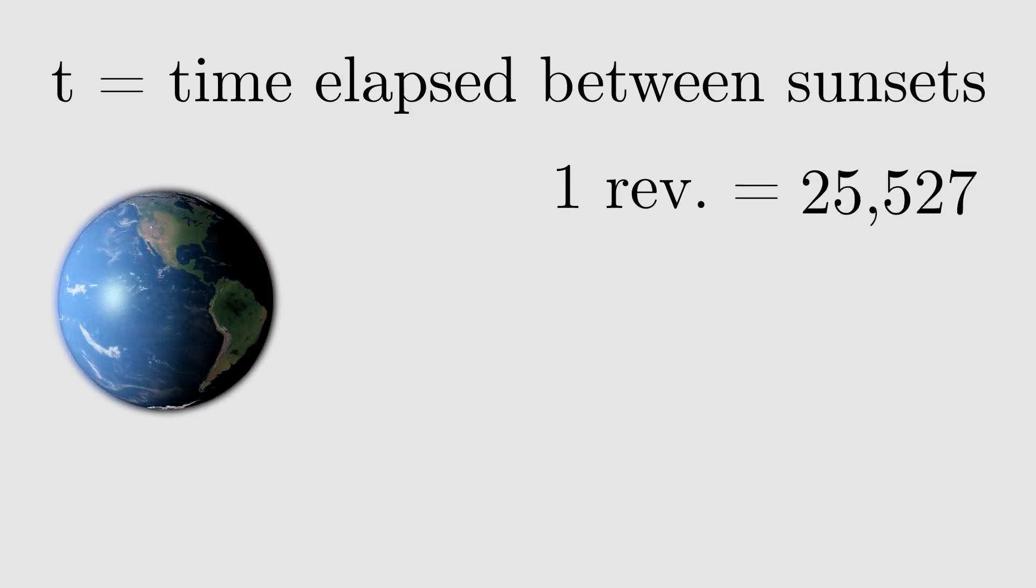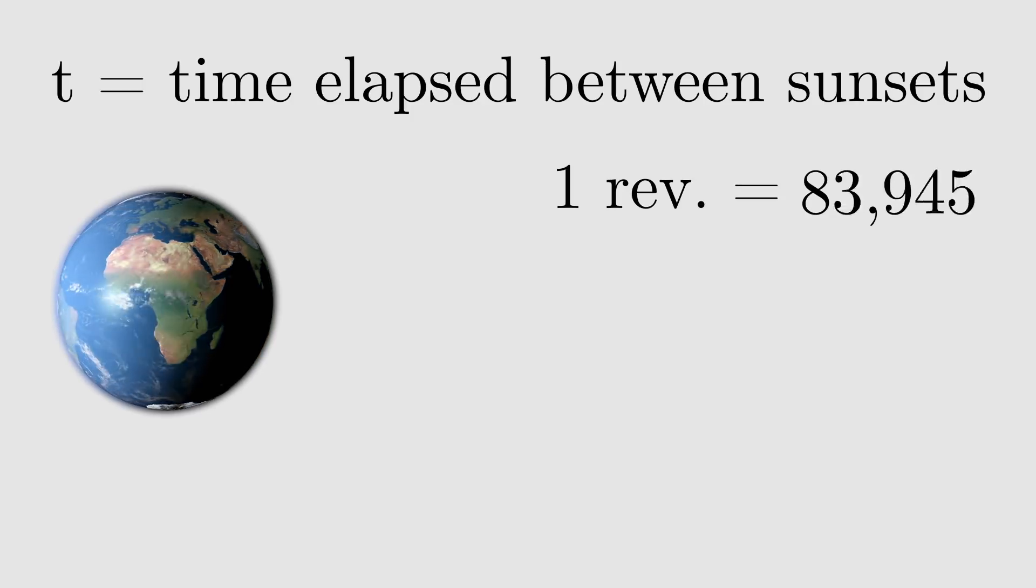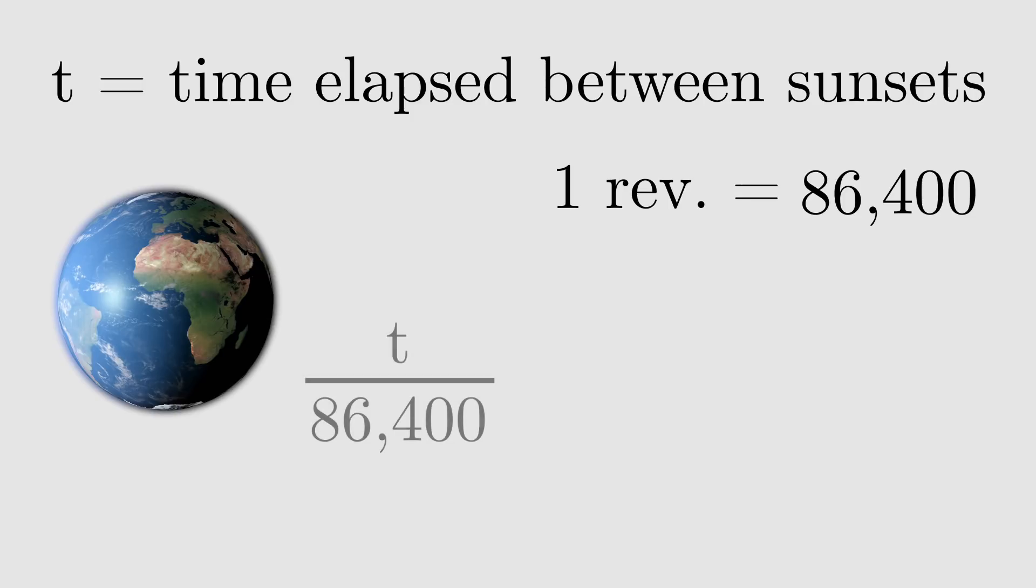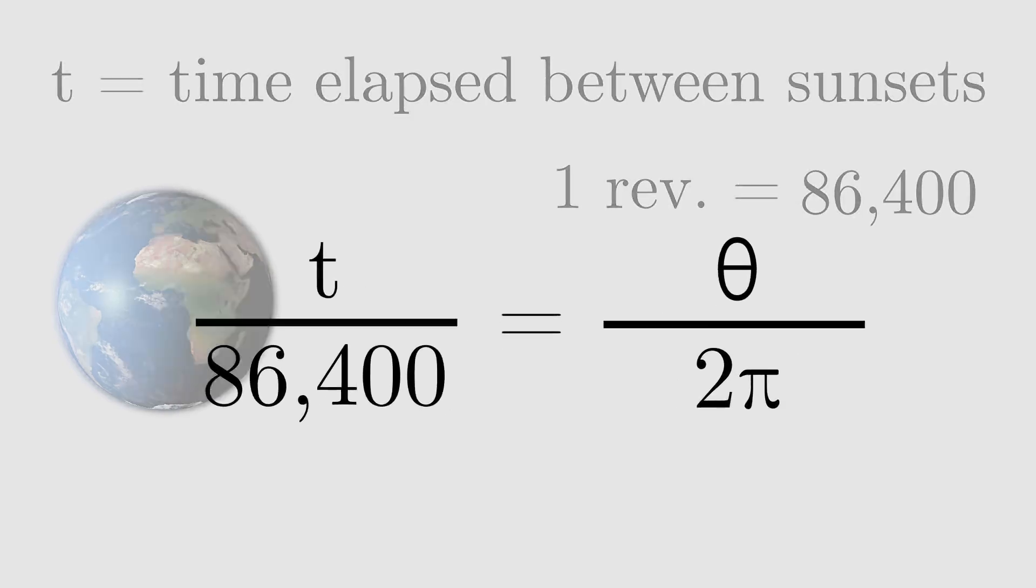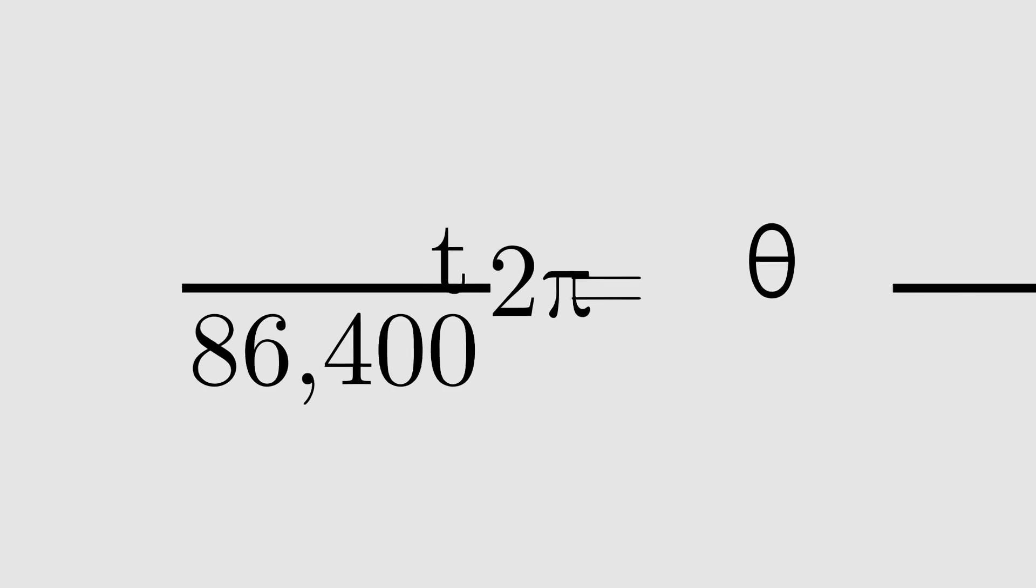Since the Earth rotates once in 24 hours, or 86,400 seconds, the fraction of time change for the day equals the fraction of angular change for the circle. So T over 86,400 equals theta over 2 pi. We can easily solve for the angle theta.